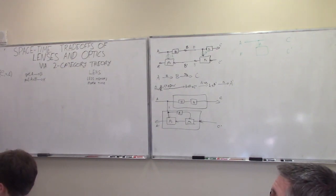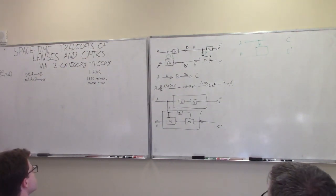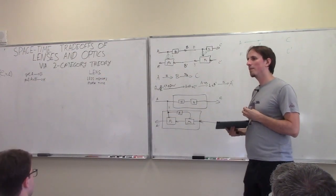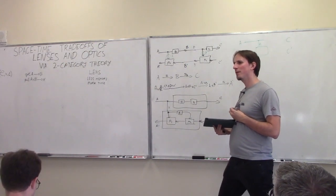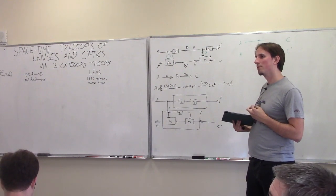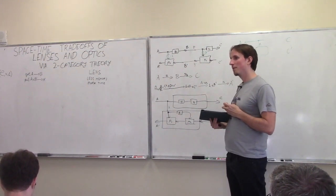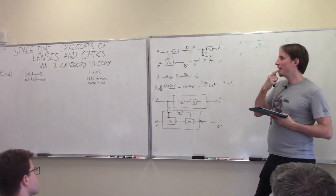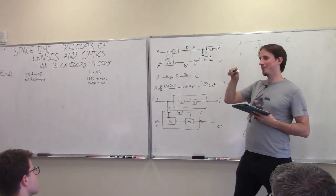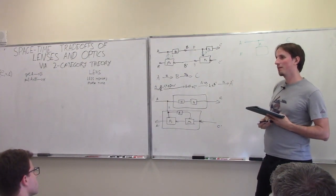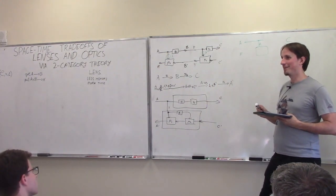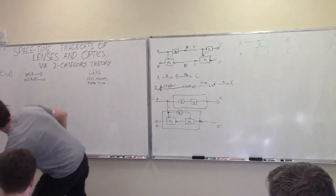Question from audience: what do you mean by the top picture? As I read the two pictures, they seem the same after some rewriting. The speaker responds: this rewrite actually carries important operational data. It lives in the two-cells, which we're going to see. So this was a category of lenses defined on a category C working bi-directionally. Now we're going to define the category of optics on the same Cartesian category C.